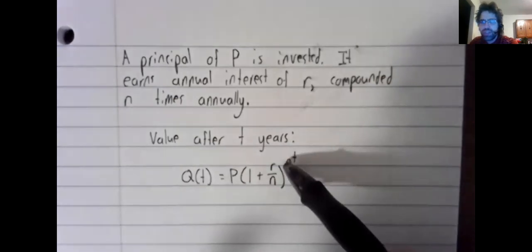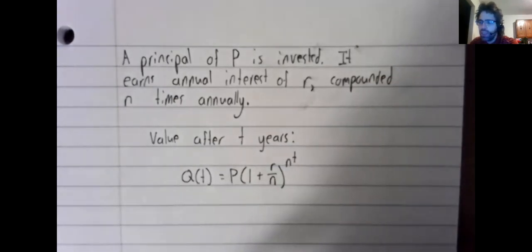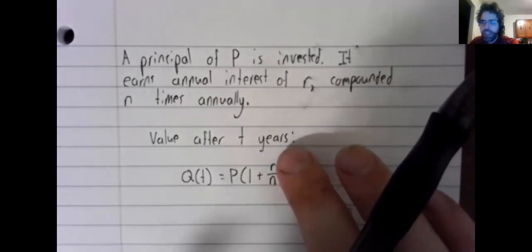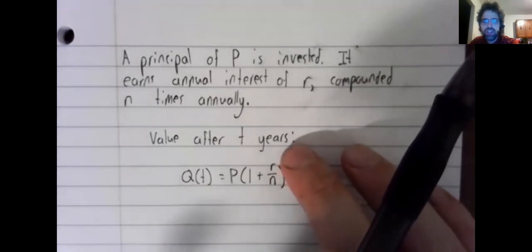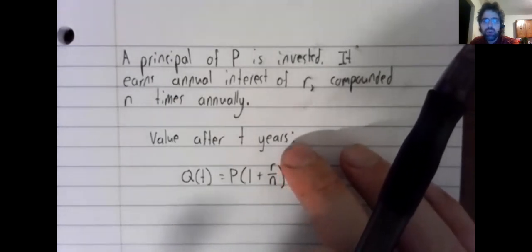As for the N up here, every time we multiply by this, we compound interest.